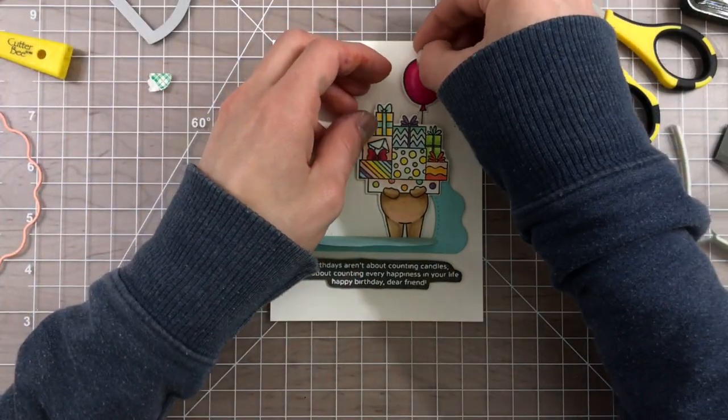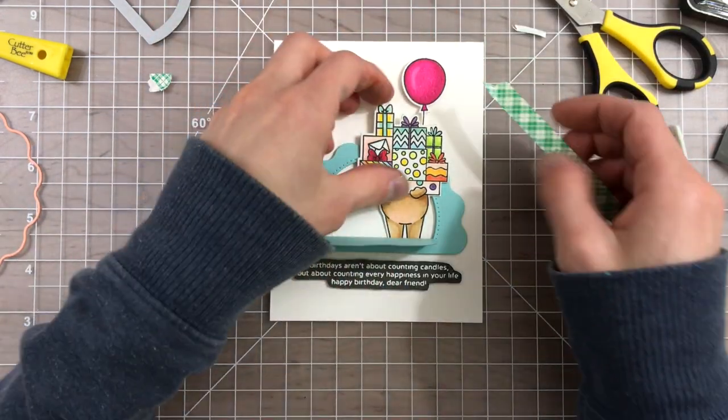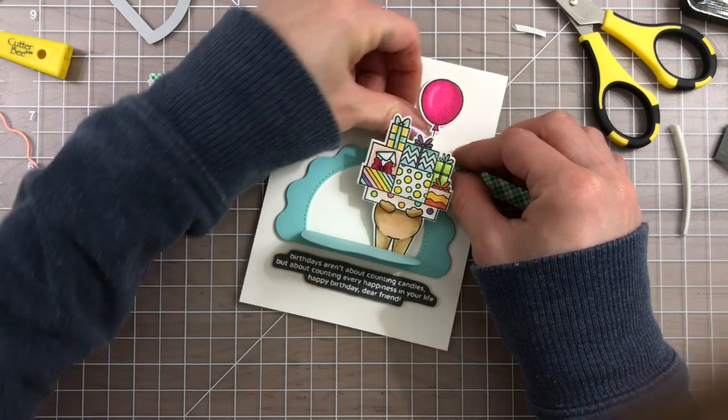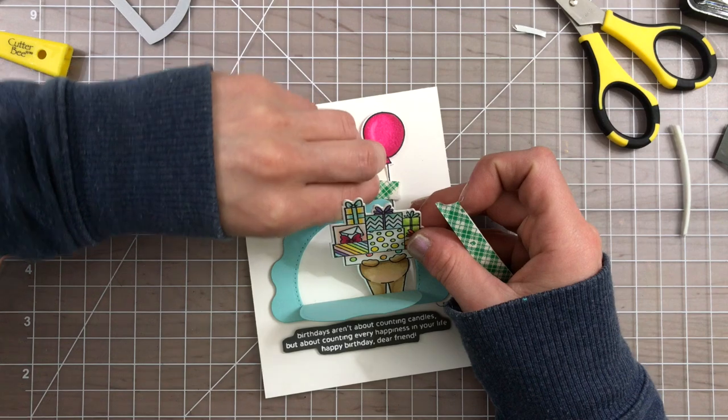I attach that underneath of that window using some foam tape and I'm attaching now the balloon and Kobe onto my card using some foam tape and I use two layers for the bear just to give him a little bit of extra pop and dimension.